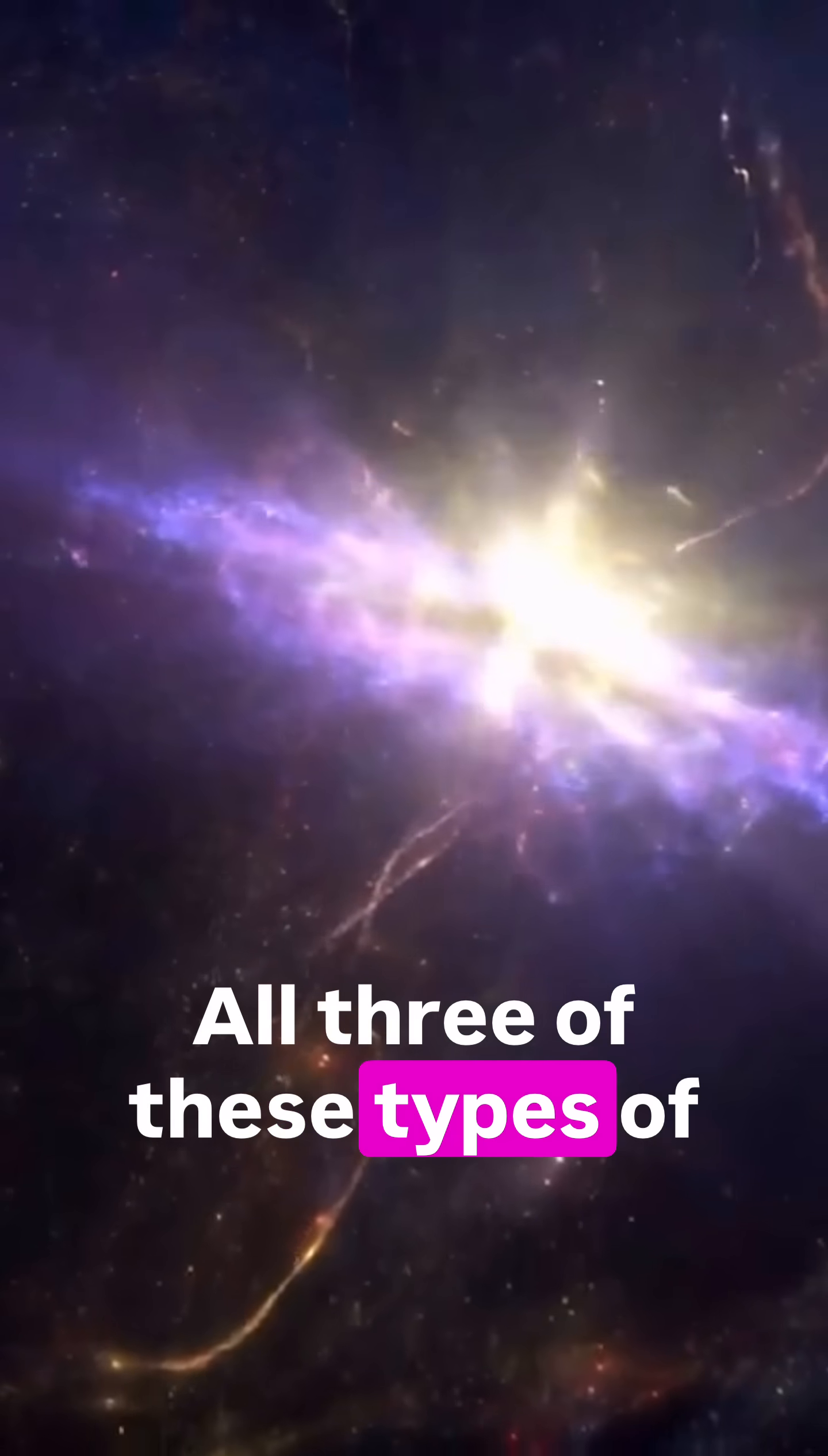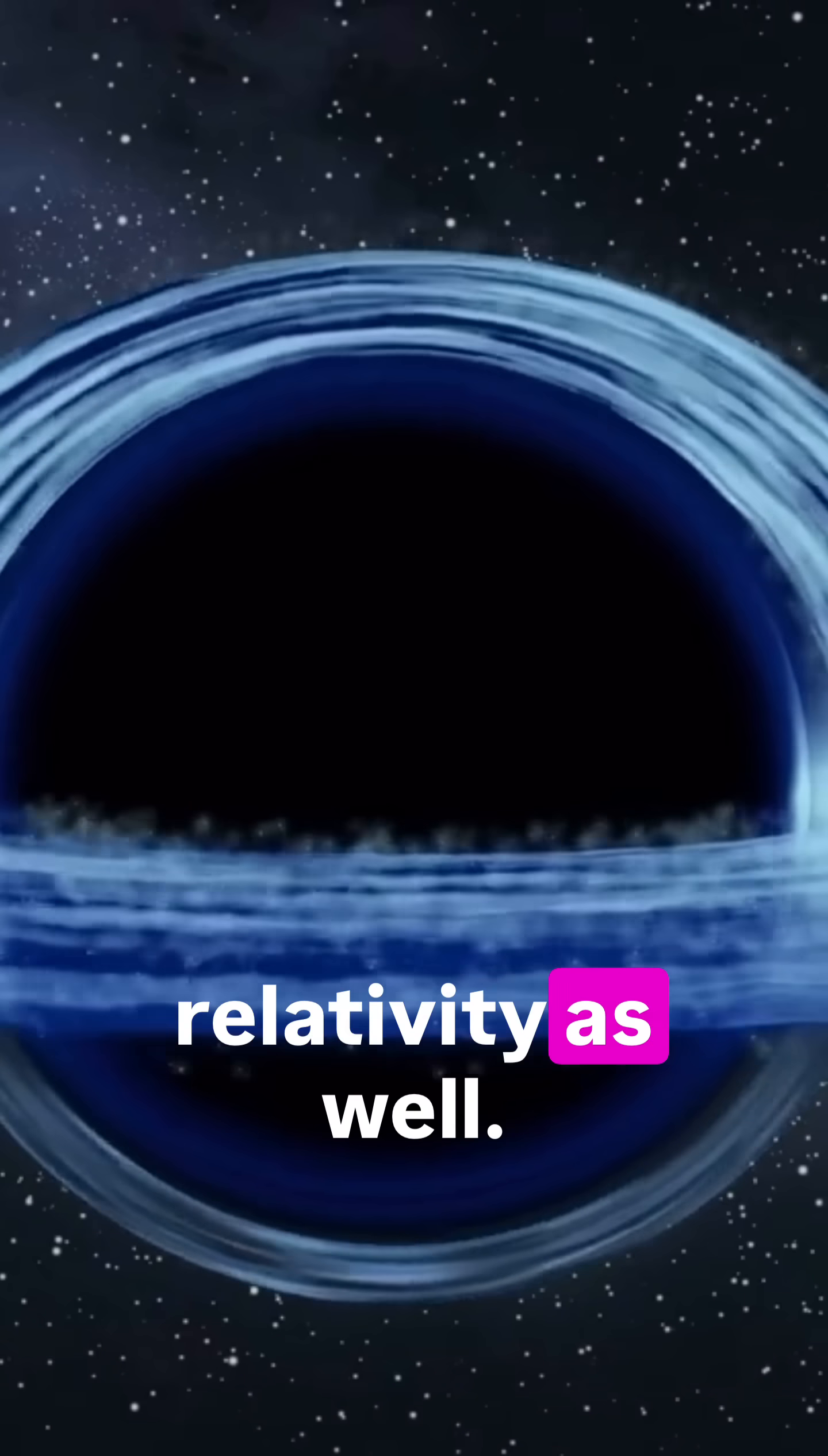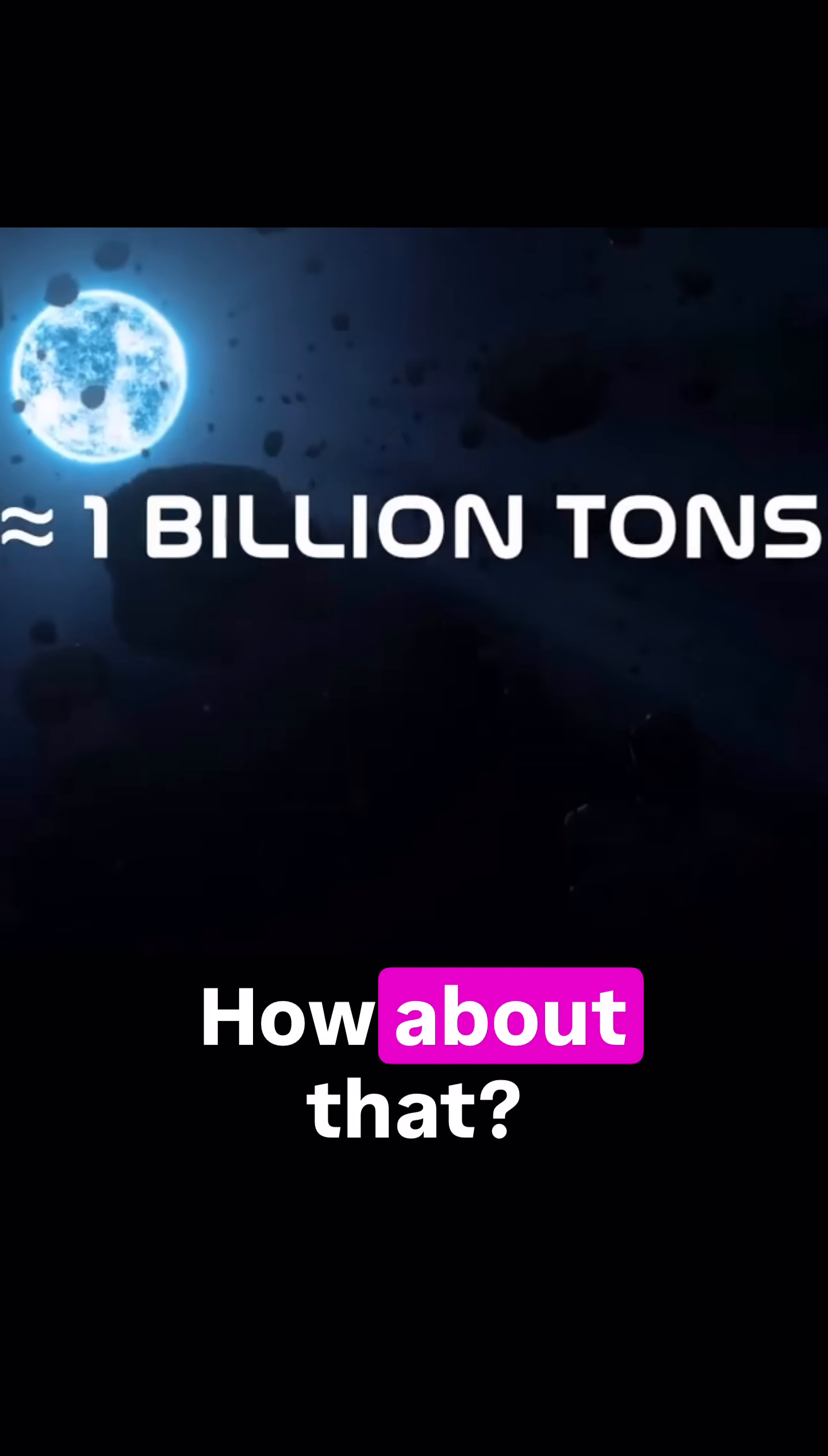All three of these types of objects are characterized by very high densities, whose description is carried out by particle physics and quantum mechanics, and their gravity by the general theory of relativity as well. So you can imagine how dense their matter is. One teaspoon of neutron star matter weighs approximately one billion tons.